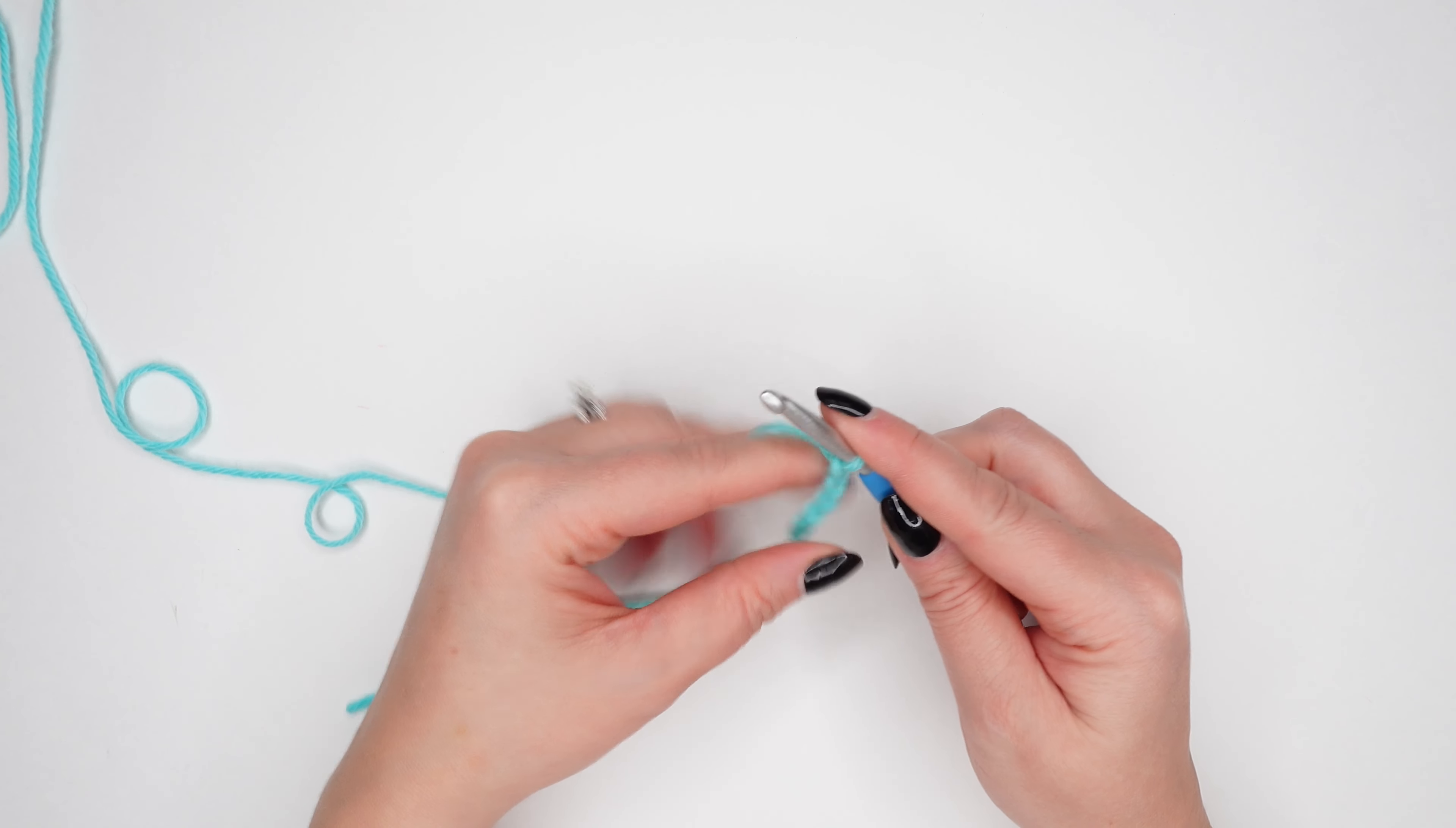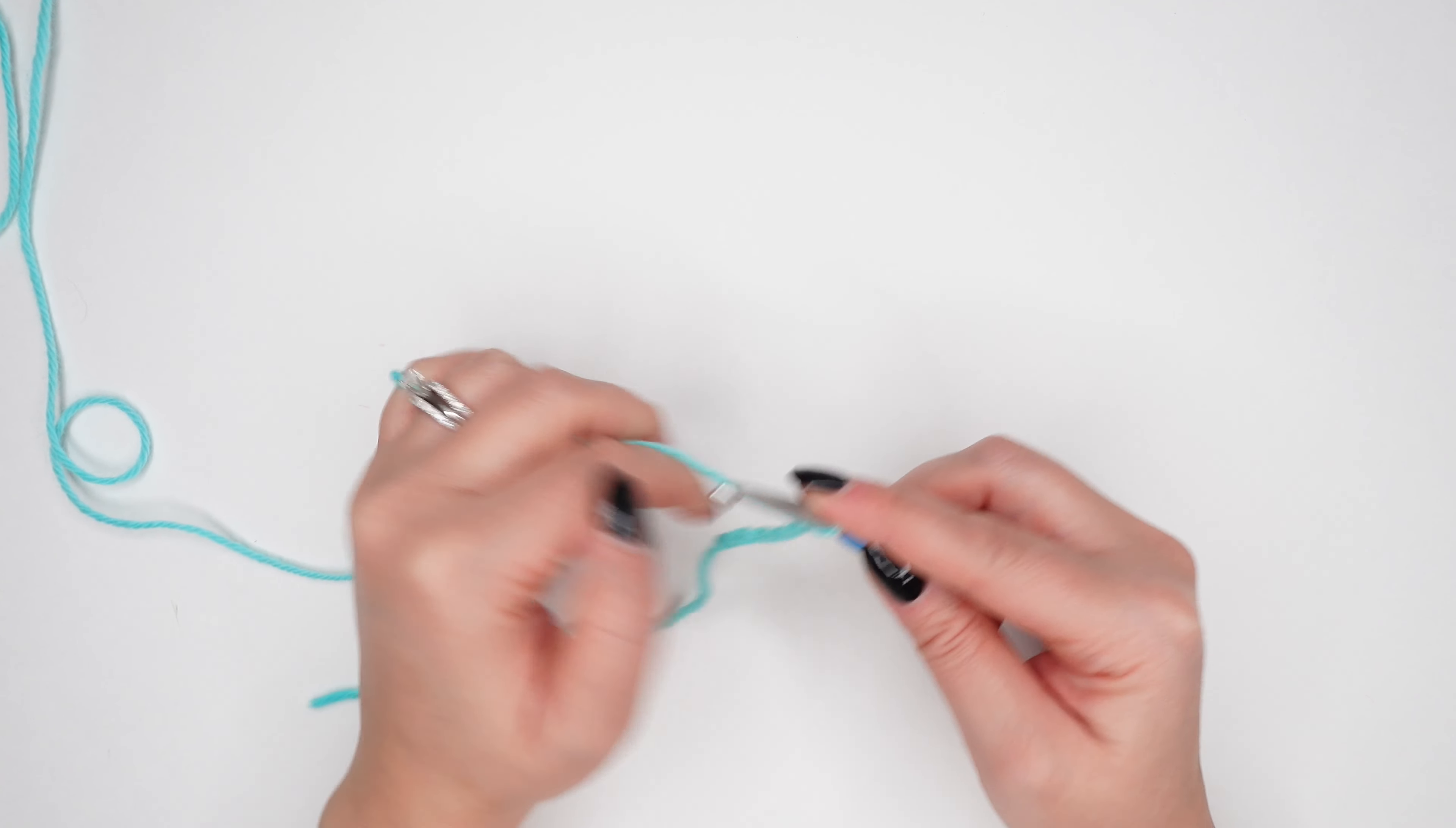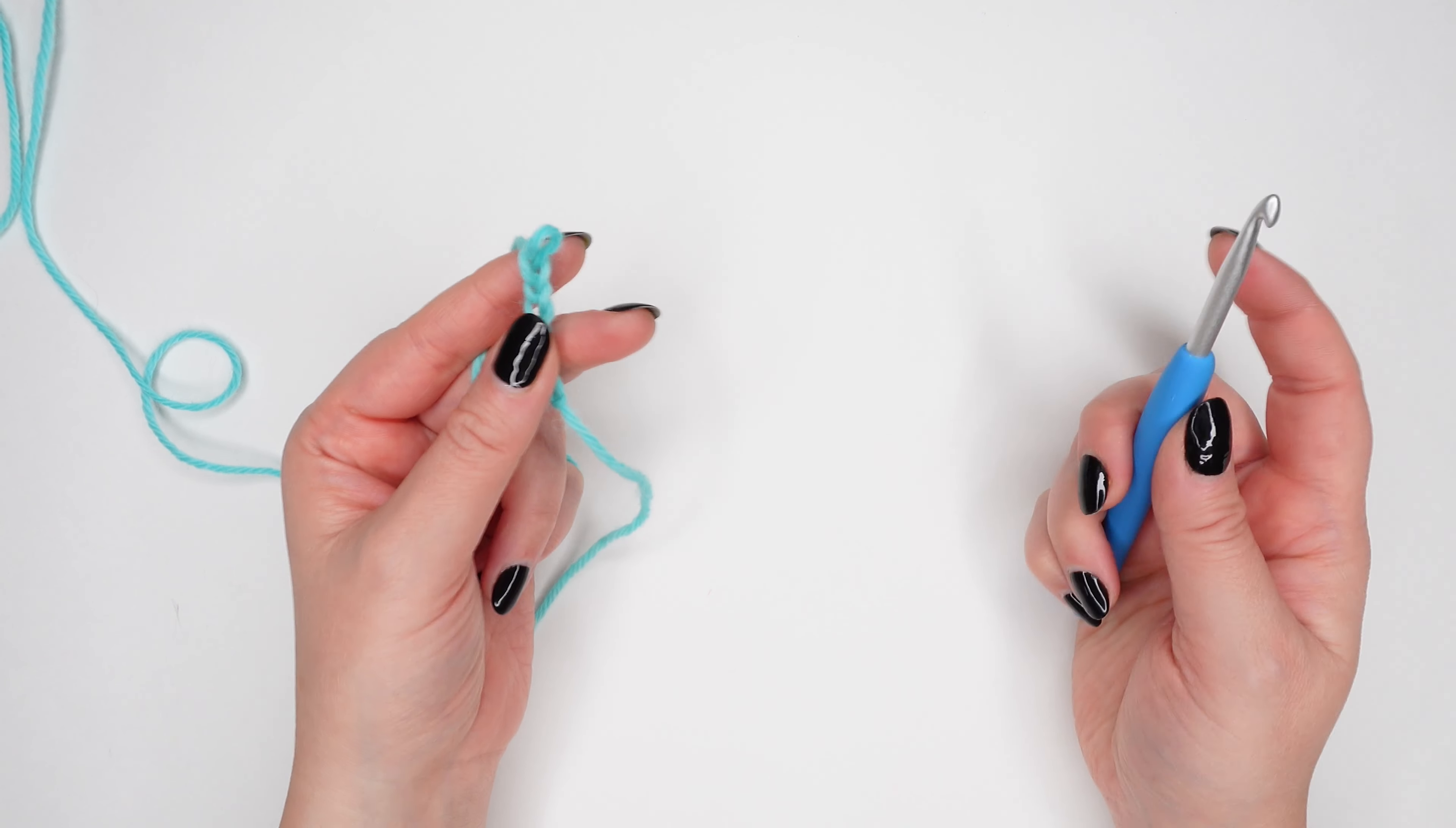As you make your foundation chain and use yarn as you go, you'll be sliding your hand down the yarn and you'll feel your pinky controlling that tension. It's your pinky that will control the tension of your yarn, and you'll use your pointer finger to feed the yarn to your hook. So to continue your foundation chain, you're going to just keep repeating this process.